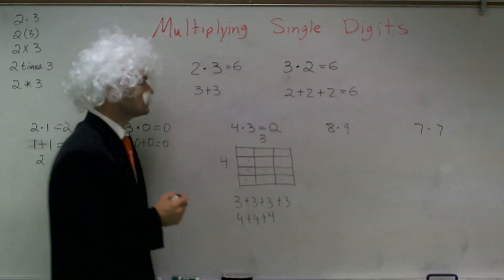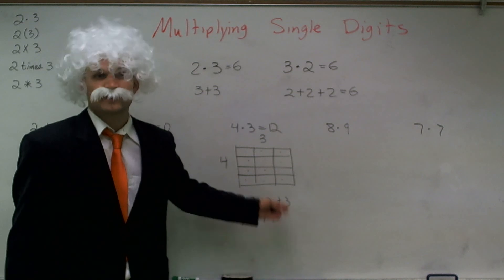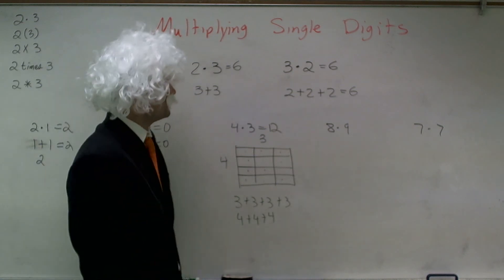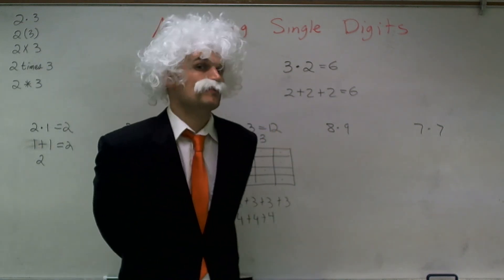Therefore, 4 times 3 equals 12, which you can also represent if you would have added these on the bottom. Now, 8 times 9 is going to get a little bit big. All right?